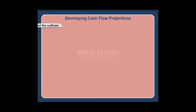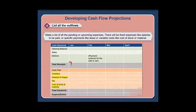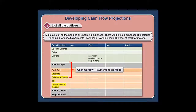Step four: list all the outflows. Make a list of all the pending or upcoming expenses. There will be fixed expenses like salaries to be paid, specific payments like taxes, or variable costs like cost of stock or material.